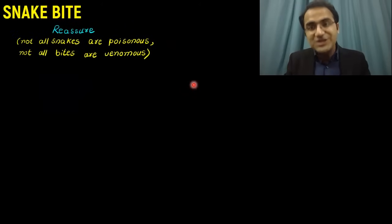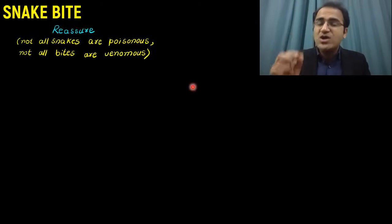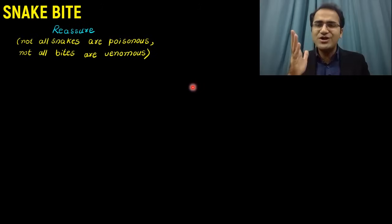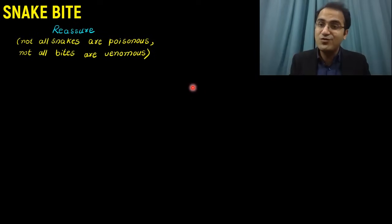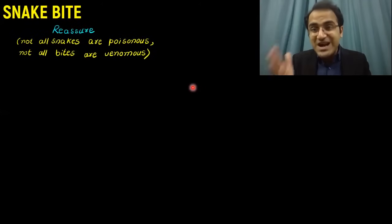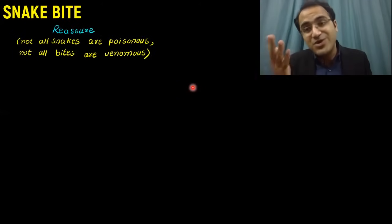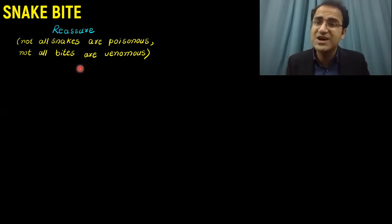In the management of a snake bite, if a patient is bitten by a snake, the first and foremost priority is to reassure the patient. As soon as they are bitten, they are so worried and anxious that there is sympathetic over-activation and increased heart rate. This is a common cause of mortality. Even in dry bites, patients die because of anxiety. You have to reassure that not all snakes are poisonous and not all bites are venomous.